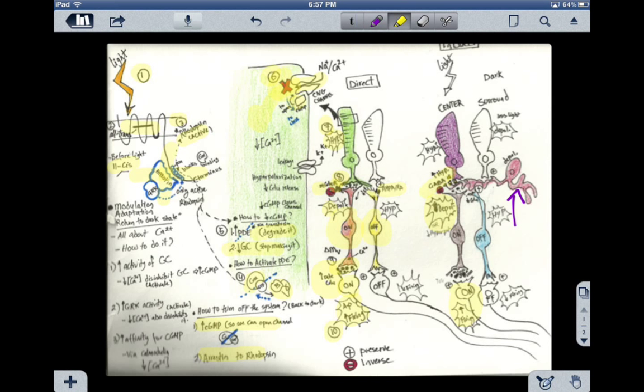I'd also like to talk about the role of calcium. It plays a very important role in this process. This block here that I left to the end talks about calcium's role. Modulation, adaptation, or returning to the dark state means high activity of guanylyl cyclase. Why? Because we need more cyclic GMP to allow sodium and calcium inside. Low calcium concentration inhibits guanylyl cyclase, meaning we have more cyclic GMP, which means activation.